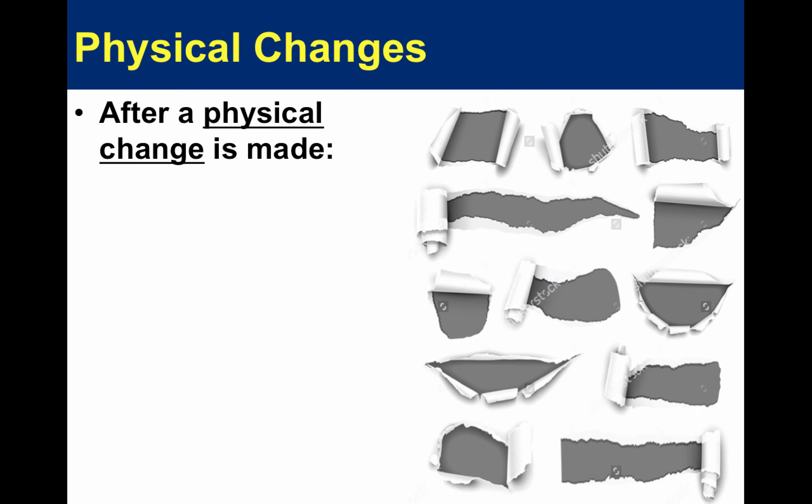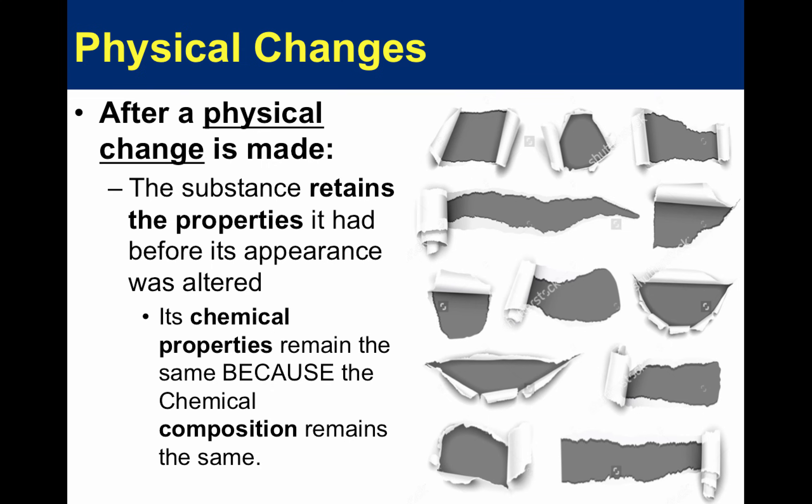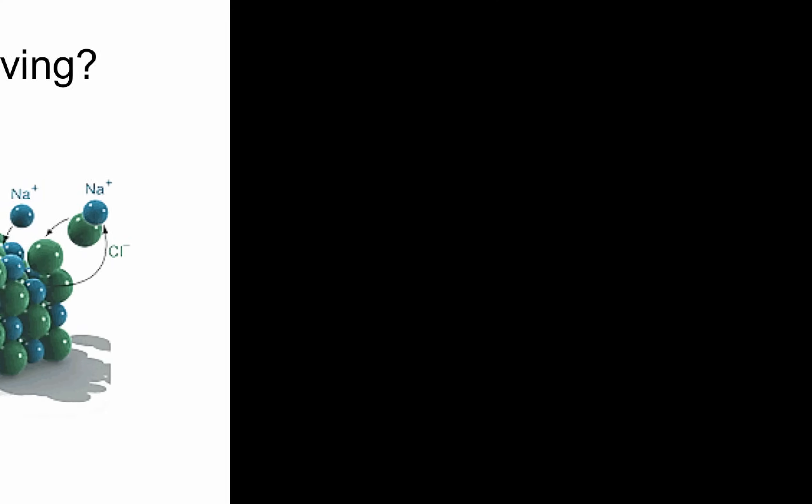Take this paper — if we physically change it by cutting it into strips, we're altering the form. We could still write on it, crumple it, or burn it. Even if we cut it into tiny pieces, we haven't changed anything on a molecular level. After a physical change, a substance always retains all of the properties it previously had, simply because we have not altered it on a molecular level — only its appearance or form.